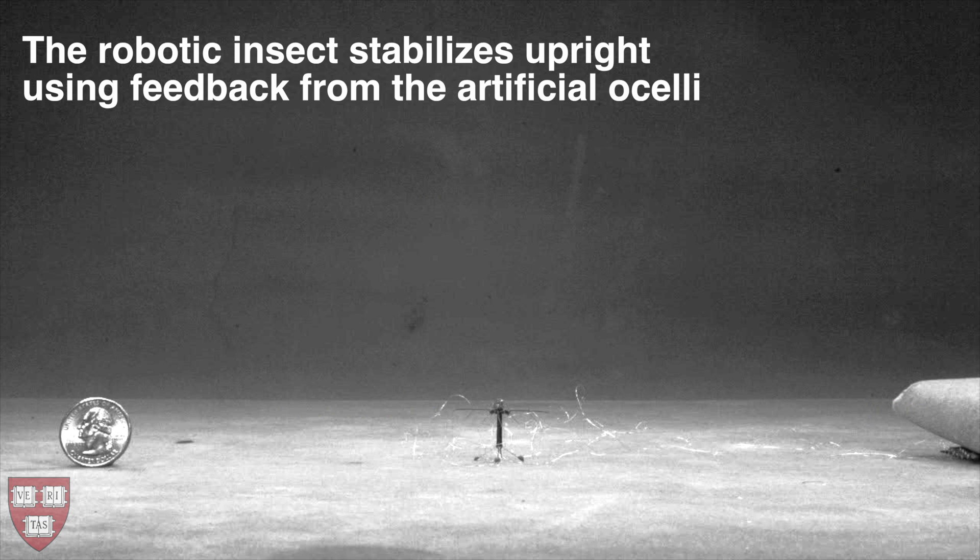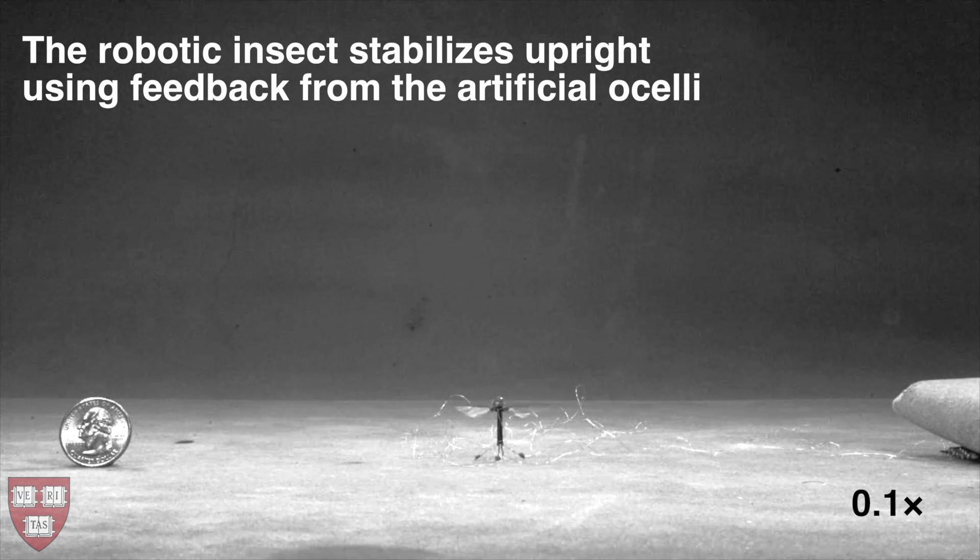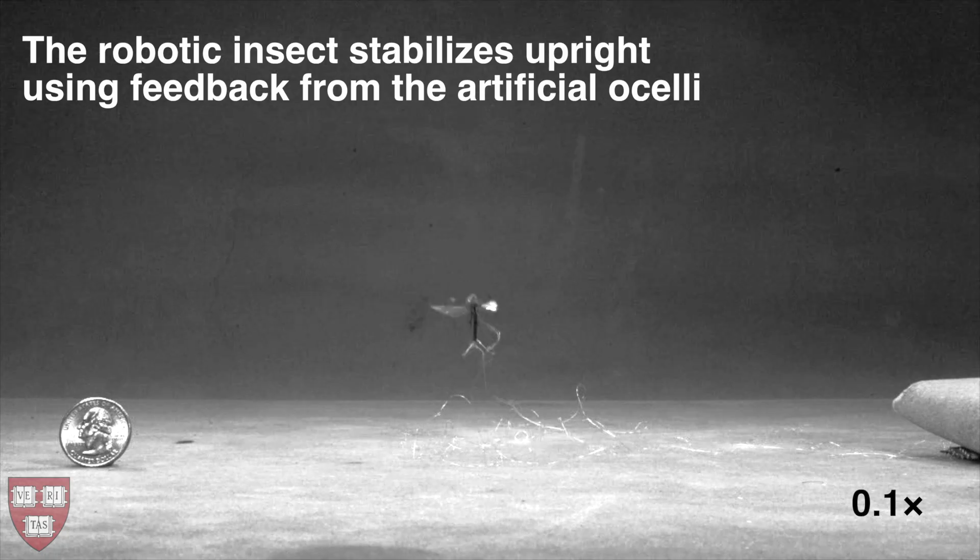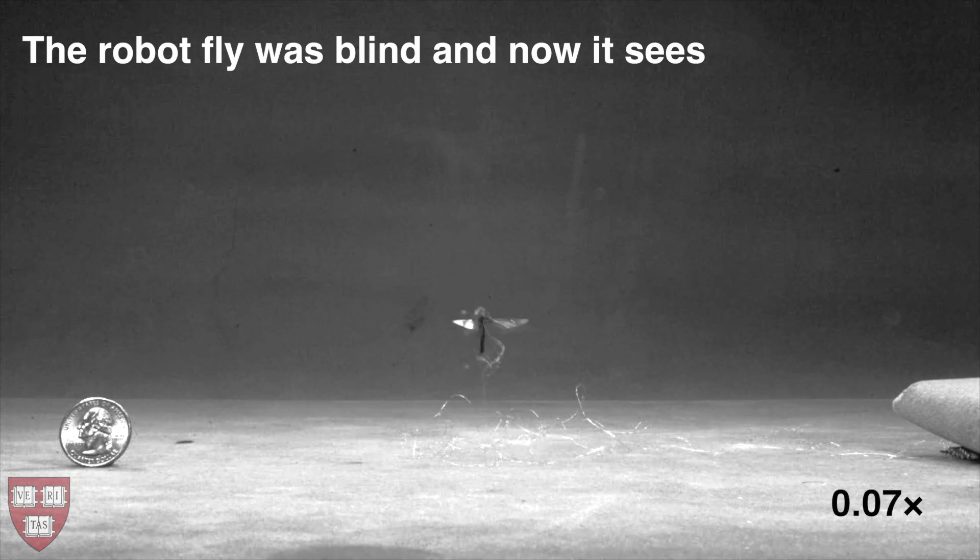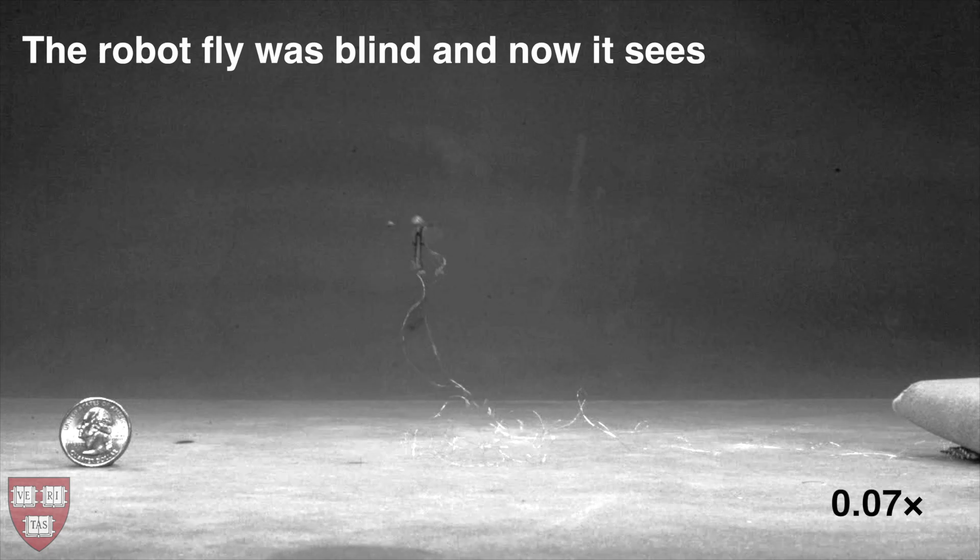By combining velocity estimation from the ocelli with attitude stabilization, the vehicle is able to remain upright during takeoff flights. This is the first time a vehicle this small has flown using nothing but feedback from a sensor carried on board.